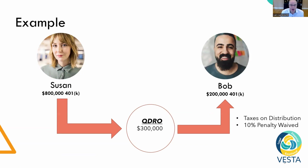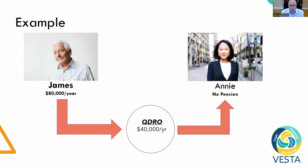So if, for example, Bob wanted to use some of that QDRO money for a down payment on a home, that 10% penalty would be waived. Another example: James has a pension of $80,000 a year and Annie does not have a pension. The QDRO could be utilized to facilitate paying Annie $40,000 per year through the QDRO.